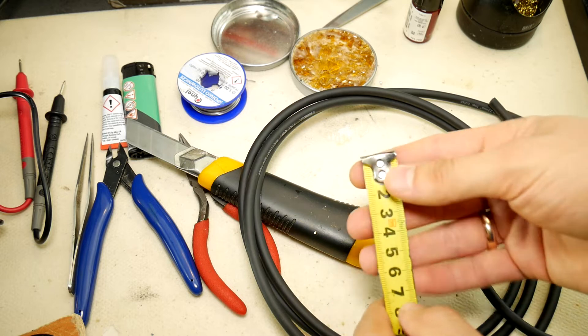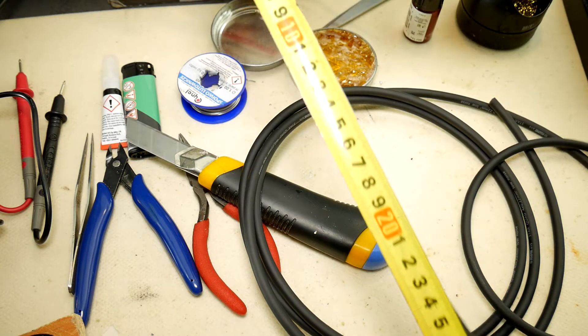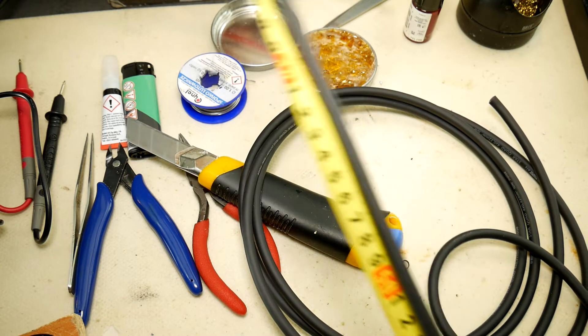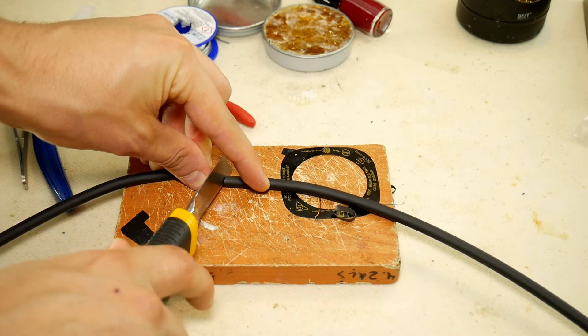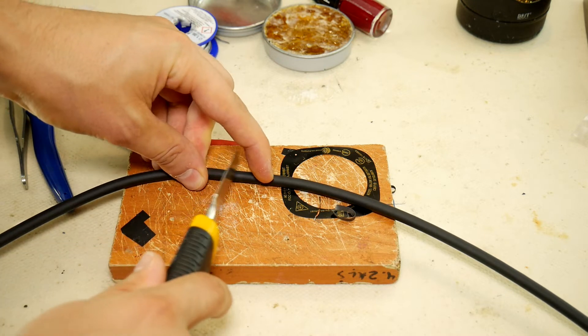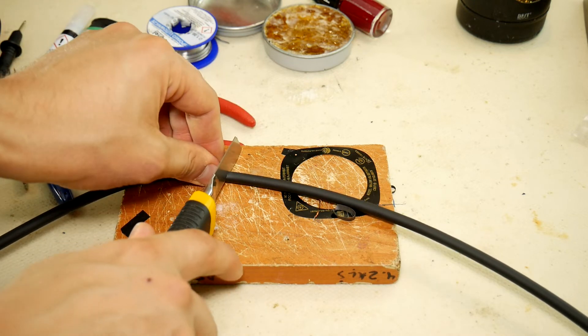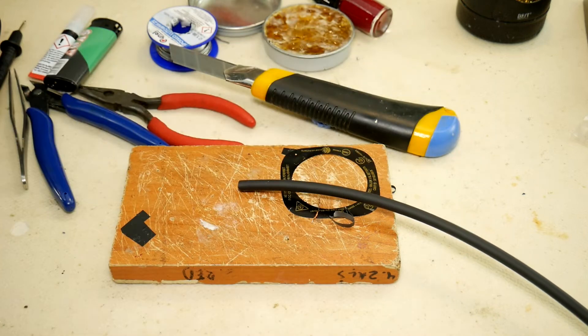Start by measuring the length of the cable you need. By building your own cable, you have a completely free hand to choose. Then cut out the length of the cable you need. An XLR balanced cable like this will cost you around 60 to 70 Euros in a shop. Making it yourself, it will cost no more than 15 to 20 Euros.